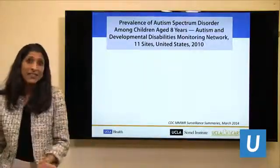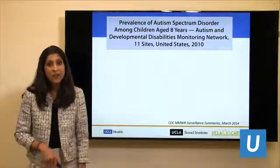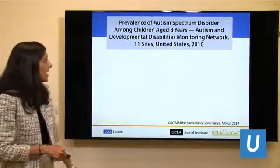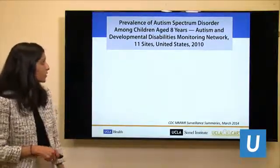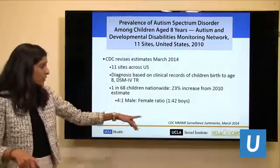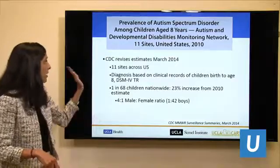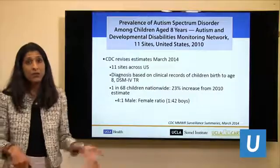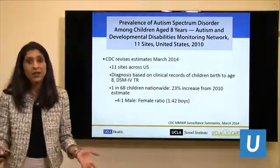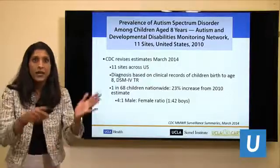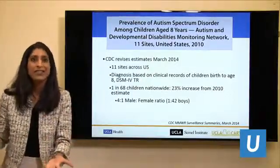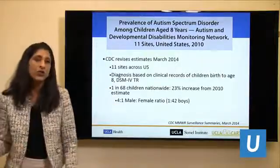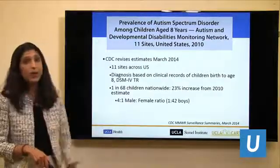Since 1980, when we started recognizing autism as a clinical syndrome, the prevalence has really increased with our increased awareness. Prevalence monitoring is done through the Centers for Disease Control. The most recent summary, published in 2014, estimated rates of autism based on querying 11 sites around the country, finding that 1 in 68 children nationwide met criteria for autism, with a 4-to-1 male-to-female ratio — more common in boys, like many neurodevelopmental disorders.